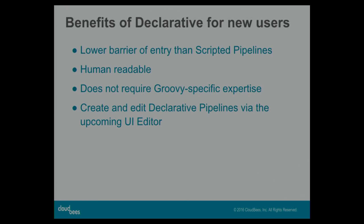The reasons for declarative are benefits for both new and existing pipeline users. For new users: declarative has a lower barrier of entry than scripted pipelines — it's not just throwing you at a blank text editor and saying write a Groovy script. It has a predictable, well-defined, and documented syntax. There's also an upcoming UI editor so you can go to Jenkins, write your job through the editor, and it'll save down into a Jenkinsfile and round-trip, so you can get started without even touching the Jenkinsfile by hand.